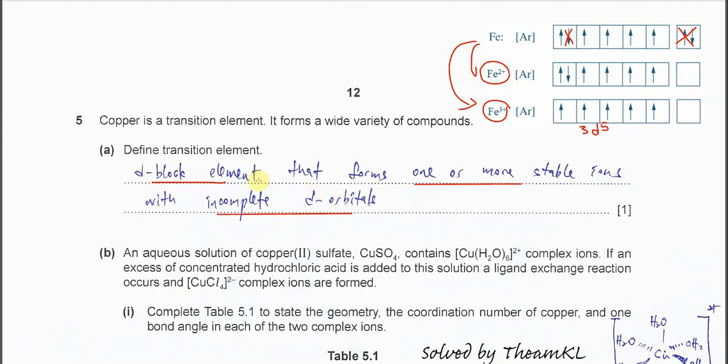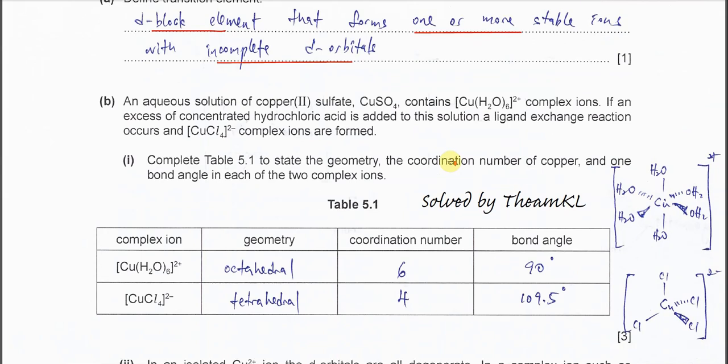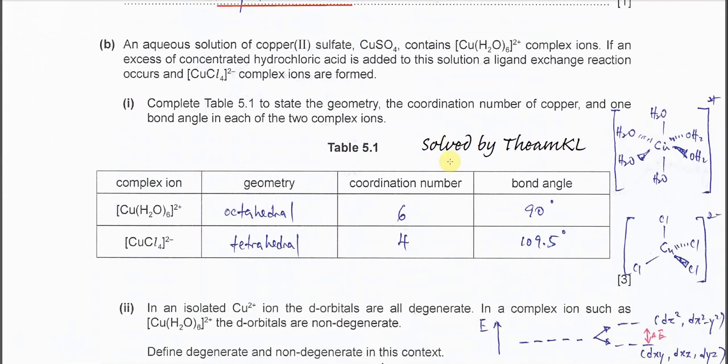As long as the D orbital is incomplete, it will form some color. Fe2+ is pale green and Fe3+ is yellow.